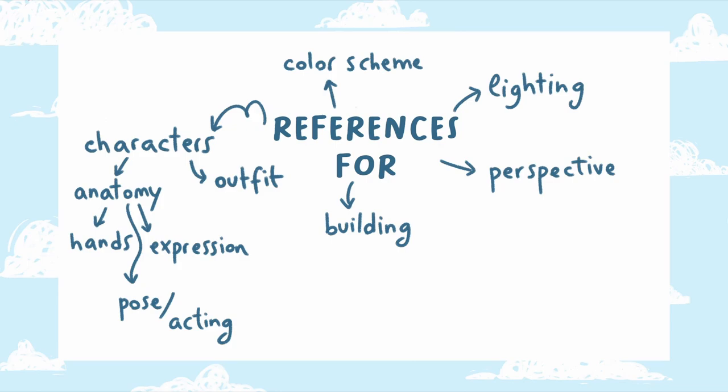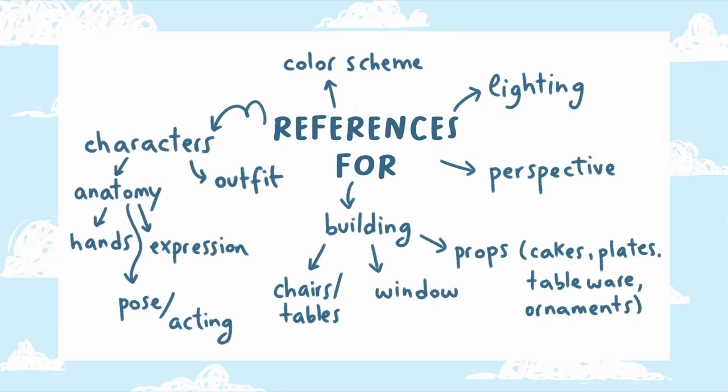Then I should have figured out the bakery building, so all the aspects such as the chairs, tables, the main window, and other props such as the type of cakes, plates, ornaments, and so on. After I figure out all the main objects in my illustration, I'd still need some references for perspective, lighting, and color scheme.